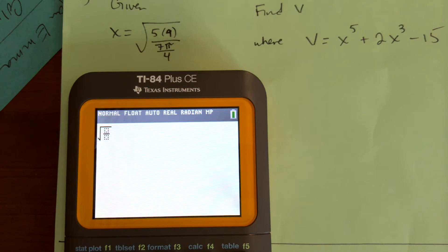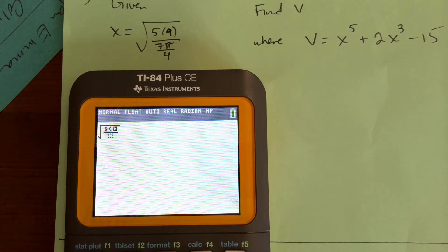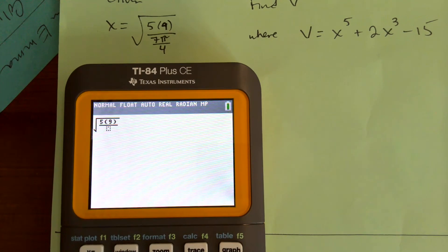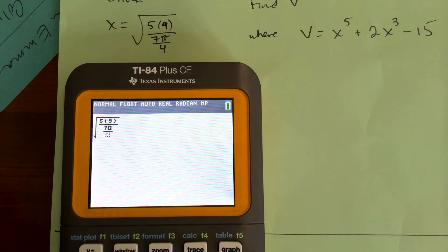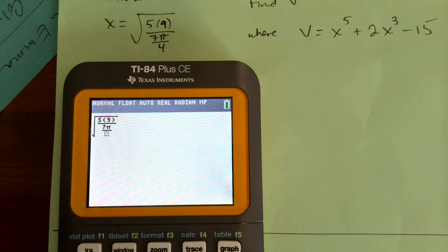You know, along the way, if you want to simplify, if it makes things easy, fine. So you could put 45, or you could just put 5 times 9. And then this, I need another alpha y equals 7 pi over 4.